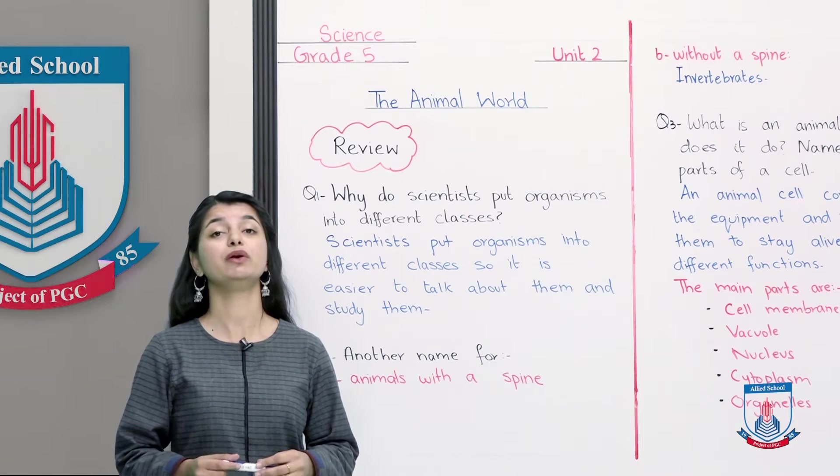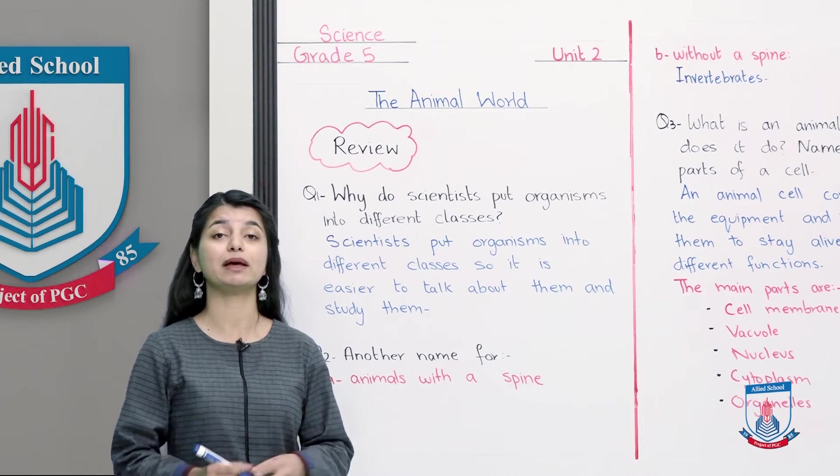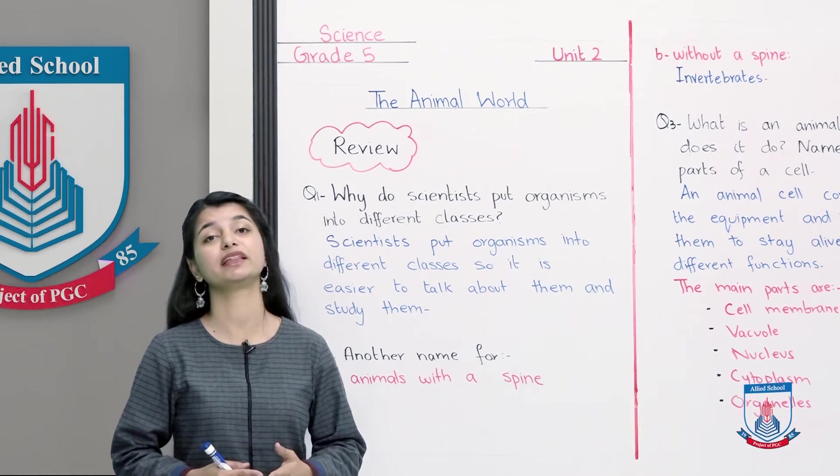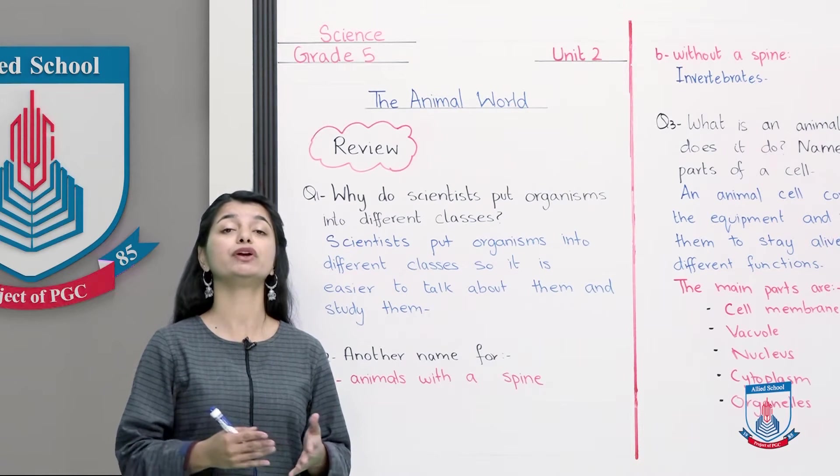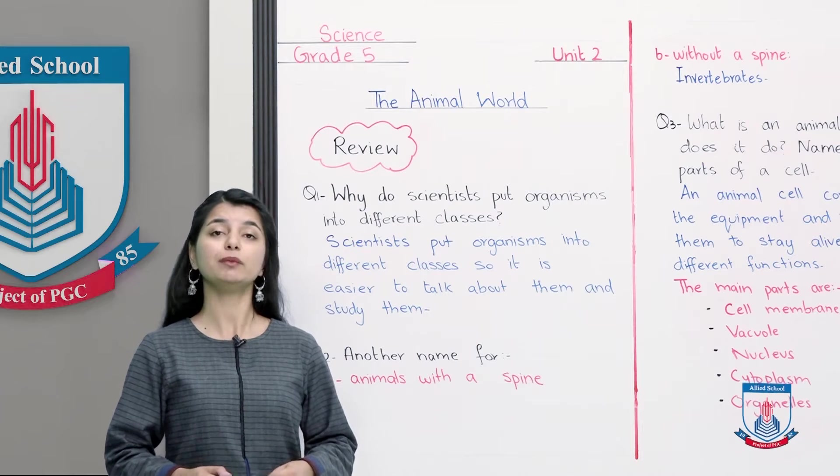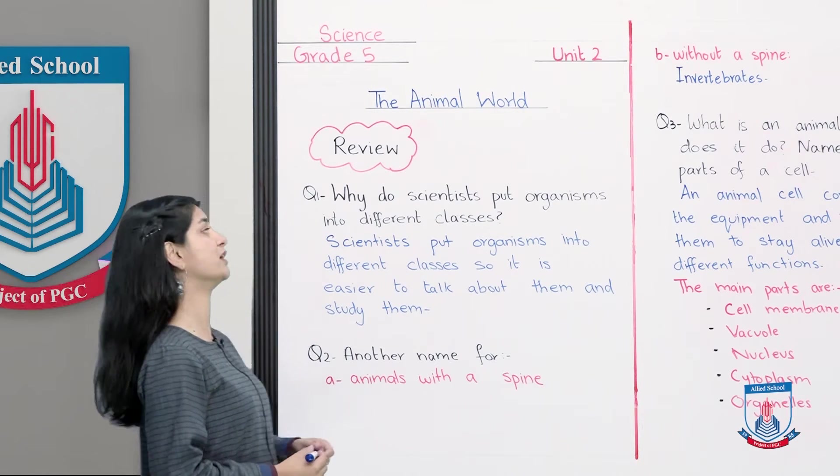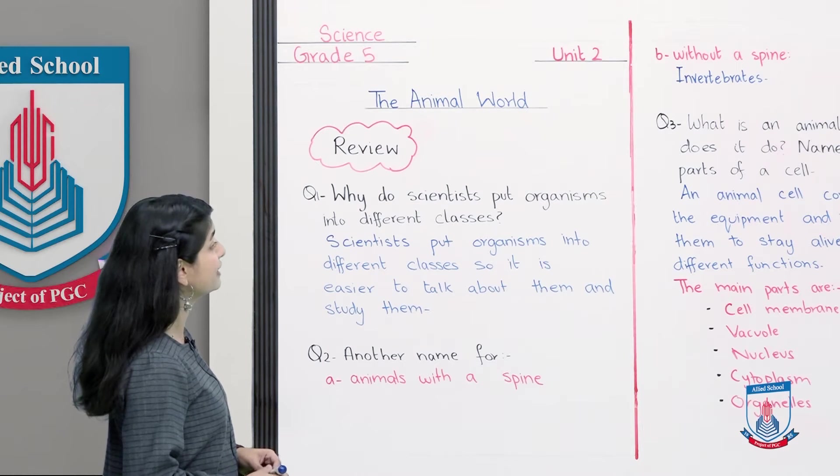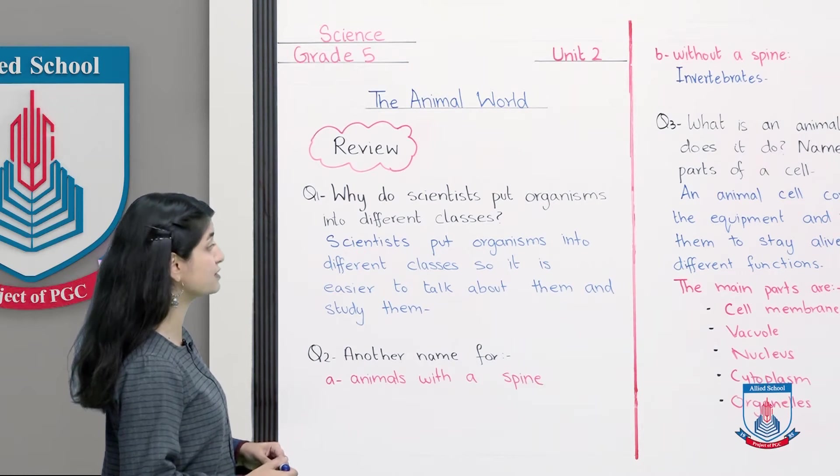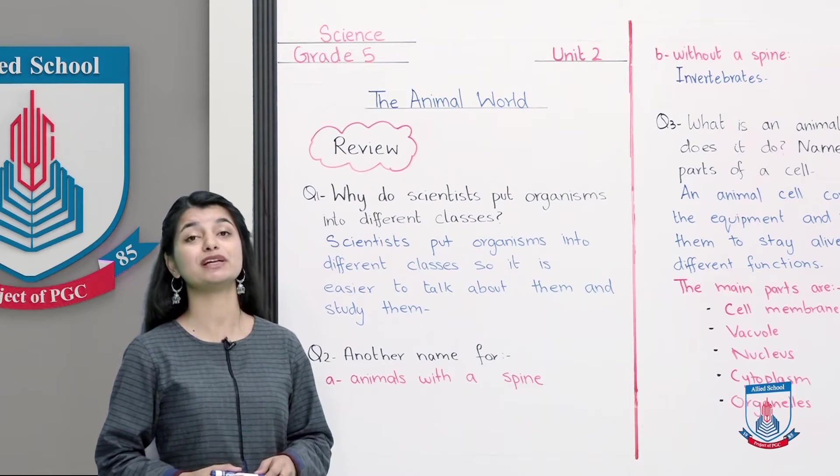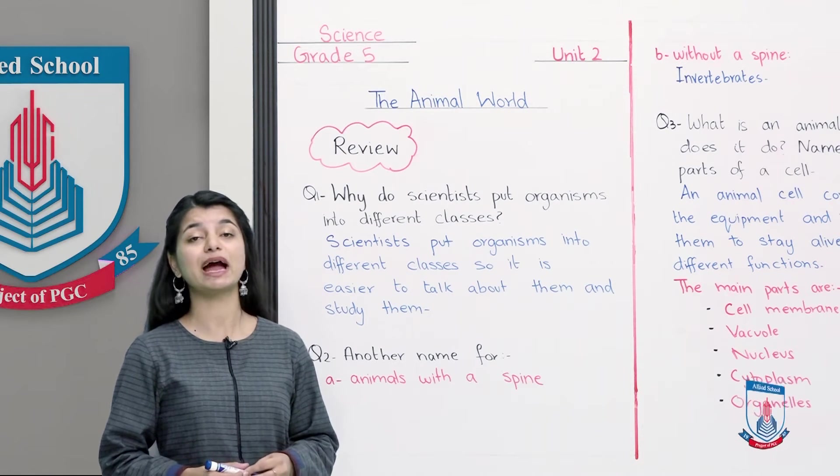I always recommend that you go and attempt the questions first and then you can see the tutorial so that you can understand how you have learned the things in a good way and what you are clear about. Once you are done with that, we will start with question number 1. Why do scientists put organisms into different classes? It was a very simple question which we had addressed in your first lecture about this chapter.